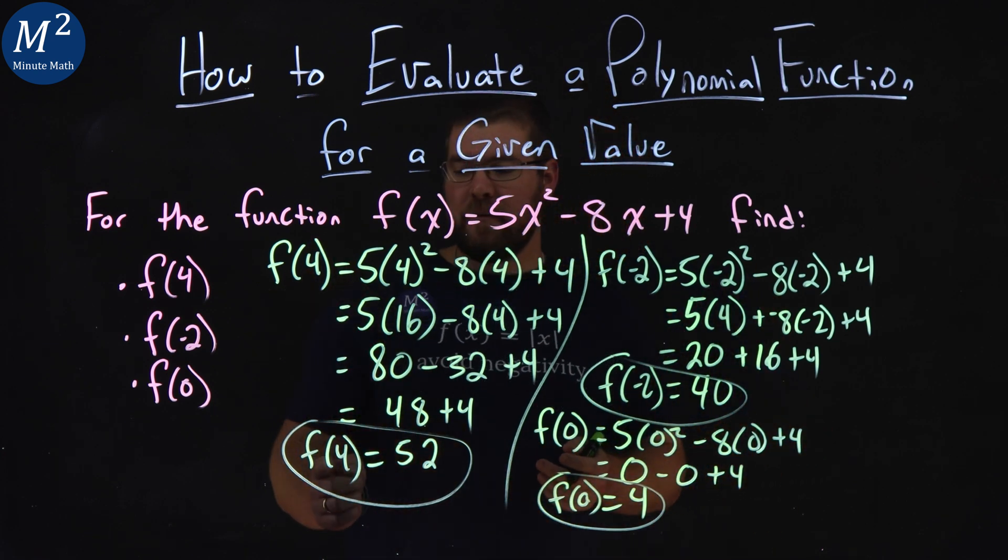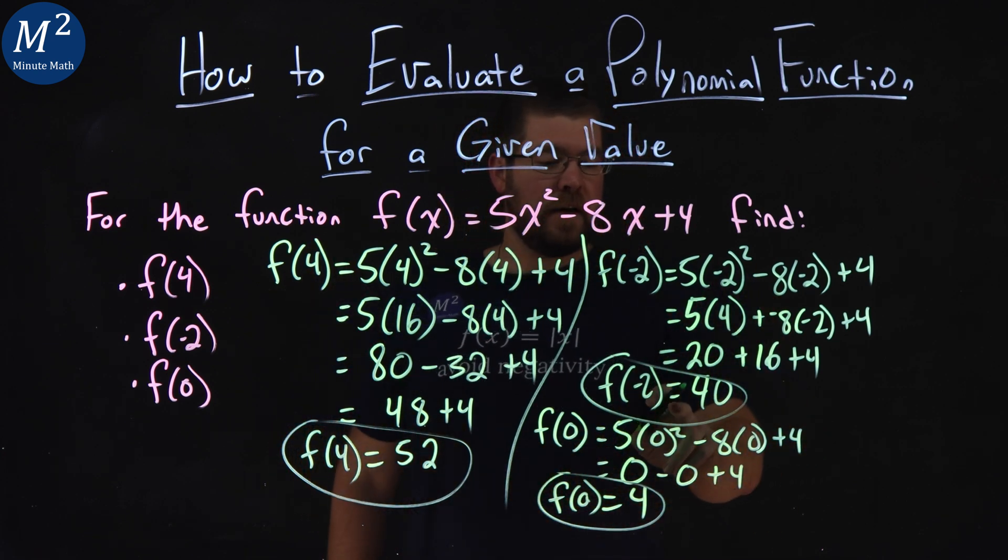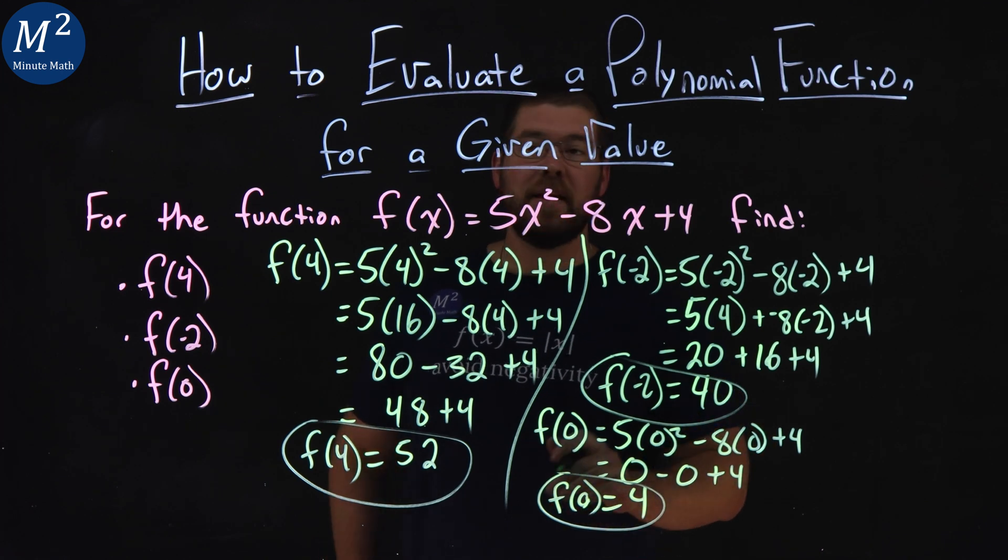And so our final answer is here, we got f(4) is 52, f(-2) is 40, and f(0) is 4.